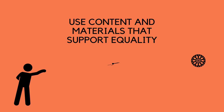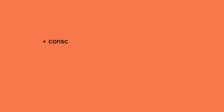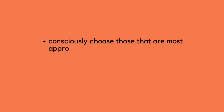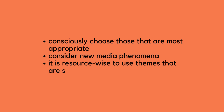Use content and materials that support equality. Make clear to yourself the key content of media literacy — what are the key content areas for your target group? Consider different options for implementing media literacy activities that support equal opportunities and consciously choose those that are most appropriate. Take into account new media phenomena in everyday life. Use themes suitable for different target groups as a starting point, such as emotional and interaction skills or sustainable development.